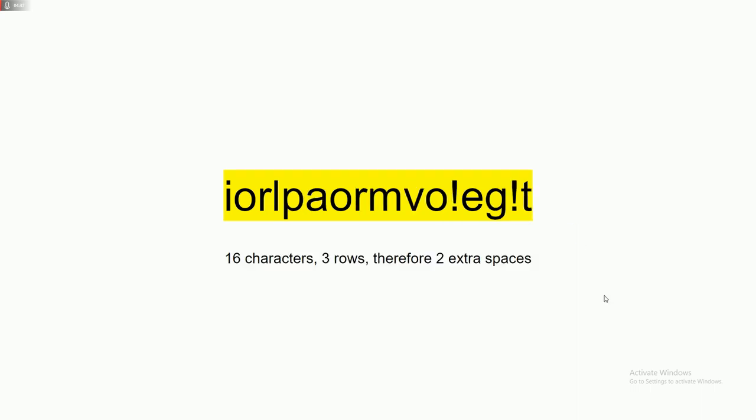So let's suppose we had our first encrypted thing, which is the IOR, LPA, same business, except we didn't have those at signs at the very end. We first see that there's only 16 characters here, and the input is asking us to split it into three rows.